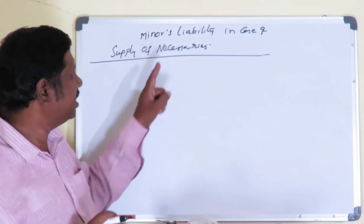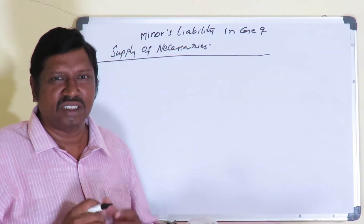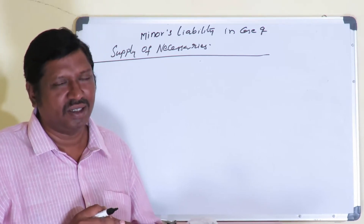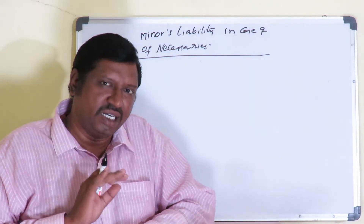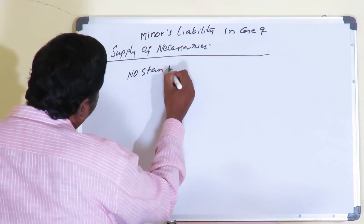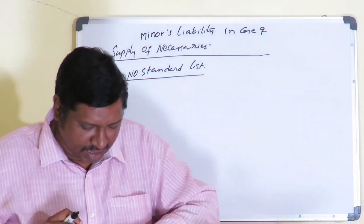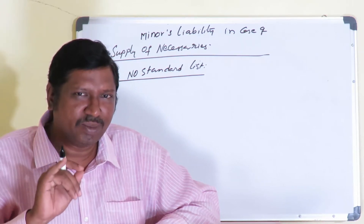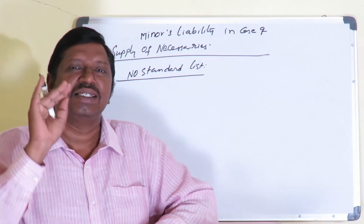You may ask: what do you mean by necessaries? In economics, necessaries means supply of food, clothing, and shelter. But in the legal context, the definition of necessaries is different — there is no standard list. The law says it is to be fixed whether something is a necessary at the time of supply, as per the case, circumstances, and situation of each and every separate case.